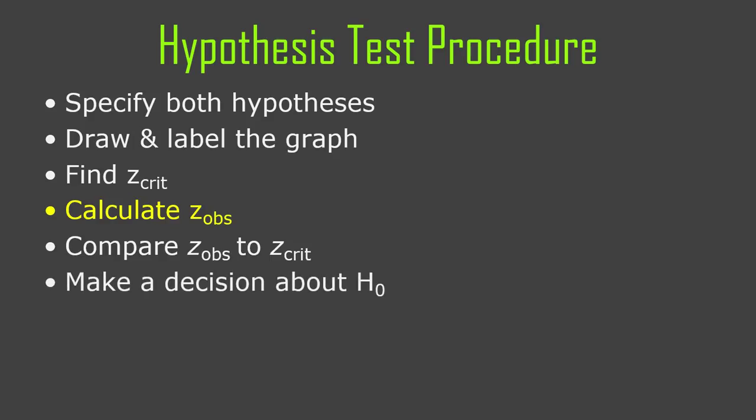You find a critical z value and an observed z value, and you draw them all on your graph so you can see what's going on. Then you compare your observed to your critical z value. If the graph and your values make it clear that your observed value is in the rejection region — that p is less than alpha — then you reject the null hypothesis. Otherwise, you don't reject it. Whatever you do, you state your conclusion, which should refer back to the population — we think this is what's happening in the population, so we think the population mean is such and such.